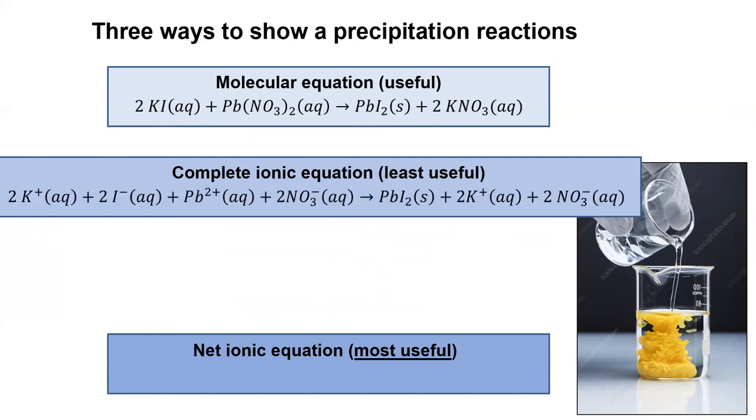The complete ionic equation splits up all the soluble ions. This equation is closer to the truth, since ions are separated in solution, but it's less useful to us because of how long and cumbersome it is. However, we need to write the complete ionic equation in order to get to the most useful form of the equation, the net ionic equation.